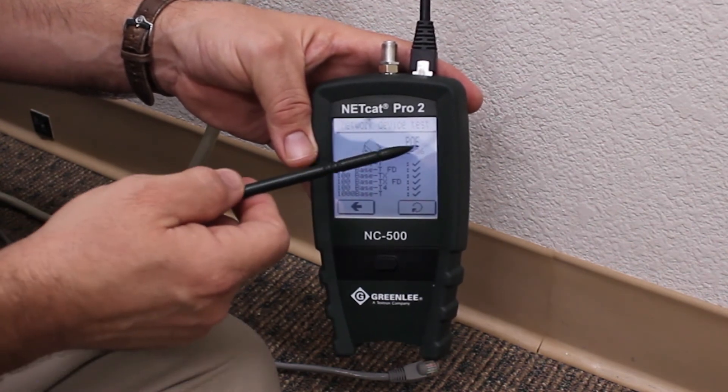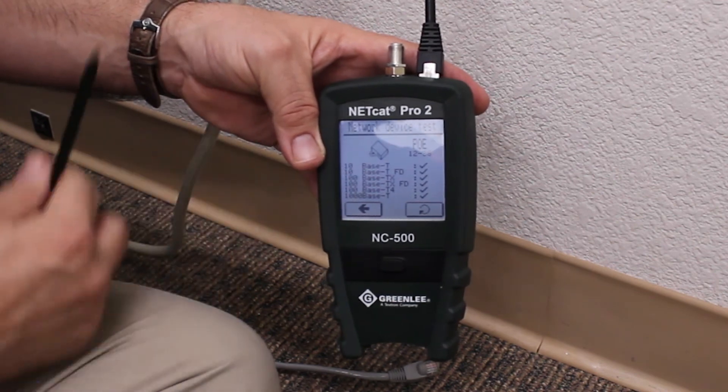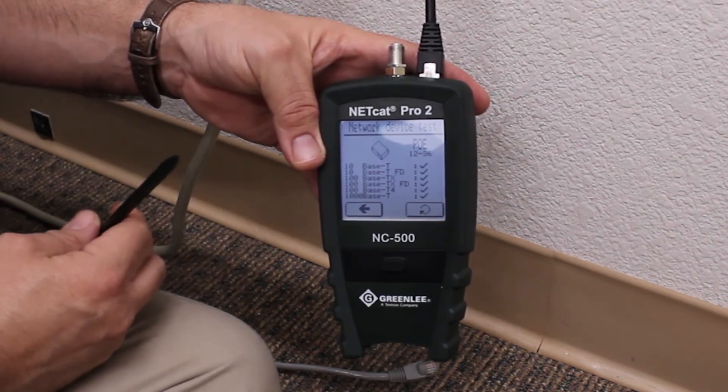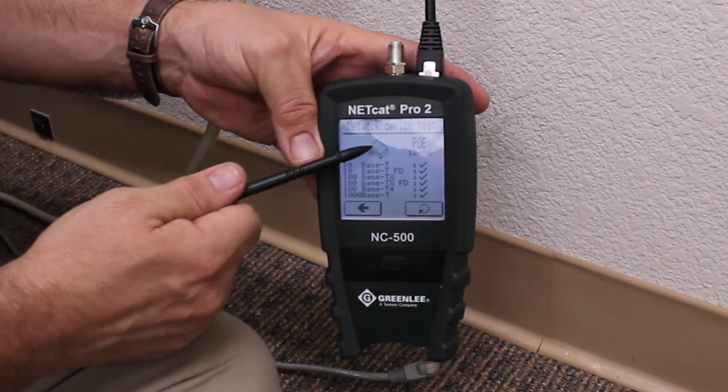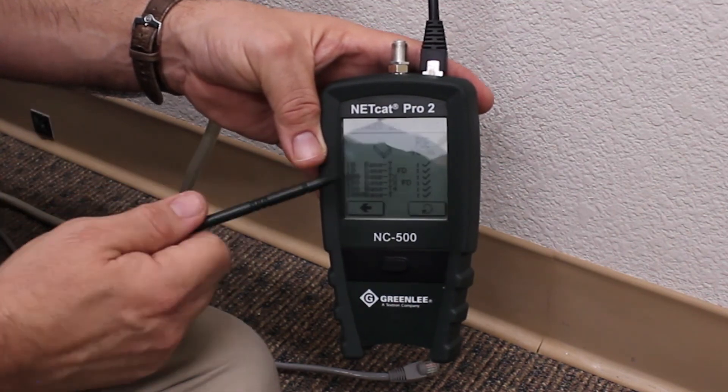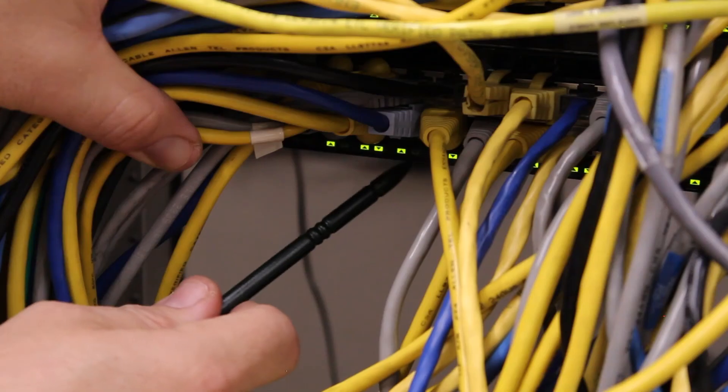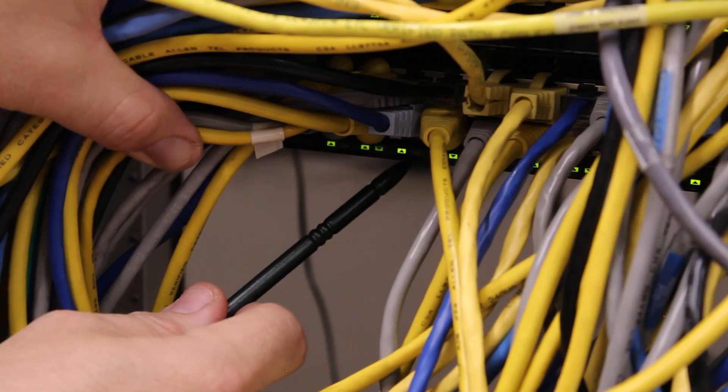It's also reflecting that there is power over Ethernet present on this network, with voltage present on conductors 1 and 2 and conductors 3 and 6. The symbol over here that slowly blinks, each time this light blinks, it is blinking the network activity port on the switch. This port is blinking once every 3 seconds. This is the port that is being tested by the NC500.